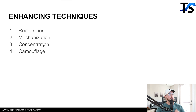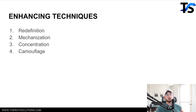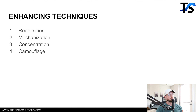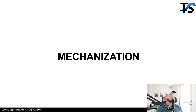Before we get started, hit that like button and subscribe for new videos every Monday, Wednesday and Friday. In part three we talked about redefinition; part two we talked about desire and identification; and part one we talked about the things you have to get to before you can write your headline. Now I want to talk about mechanization, concentration, and camouflage. Concentration and camouflage are fairly quick, and mechanization is also semi-decent, so let's start looking at what these key things are.